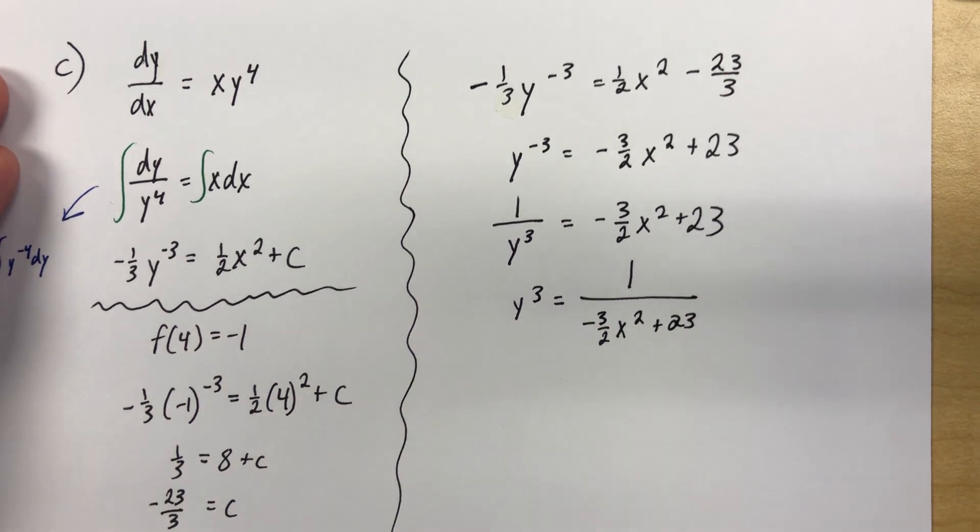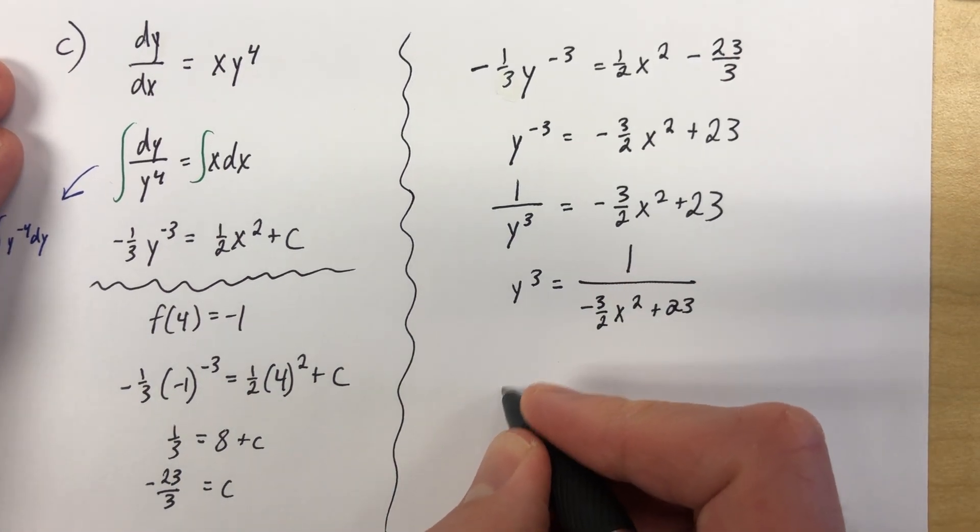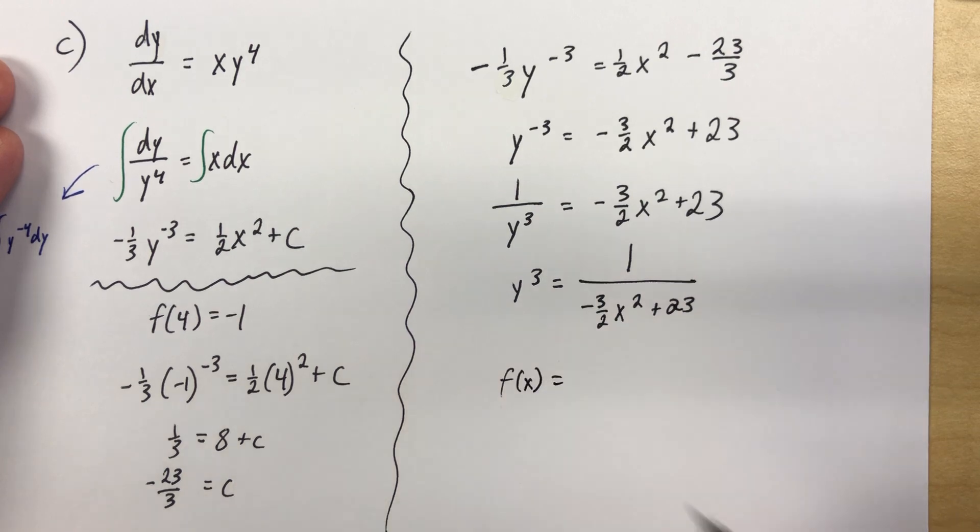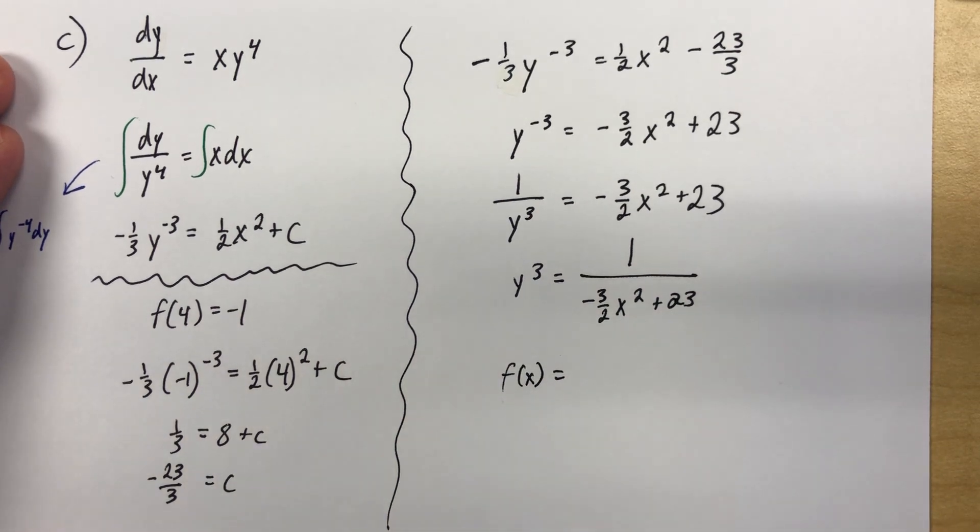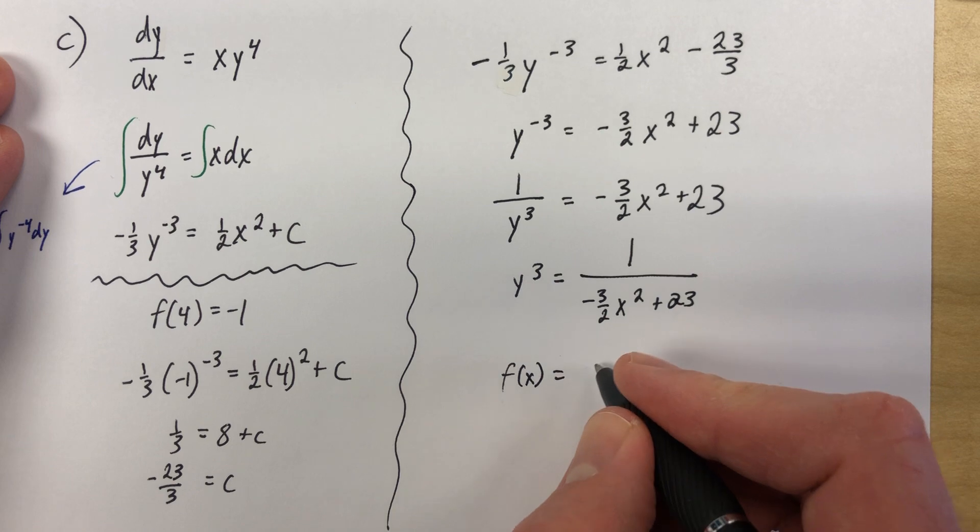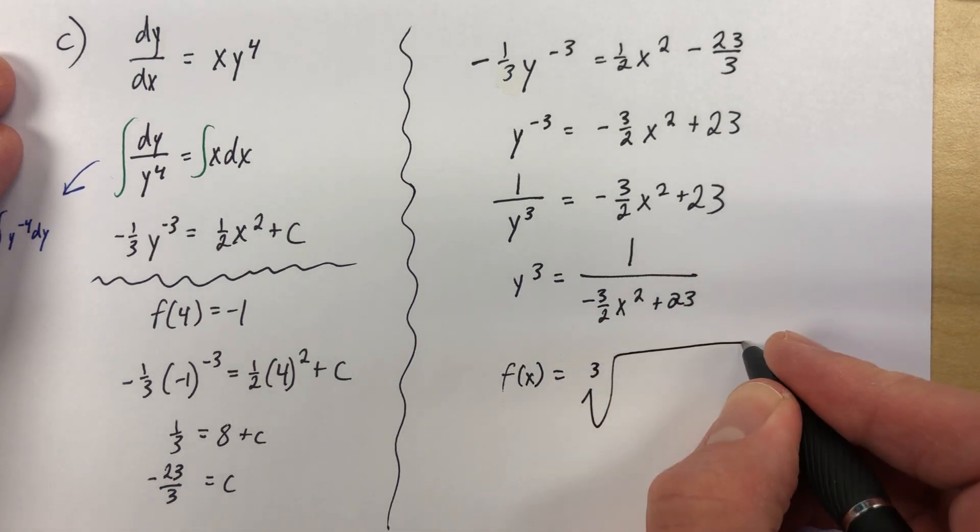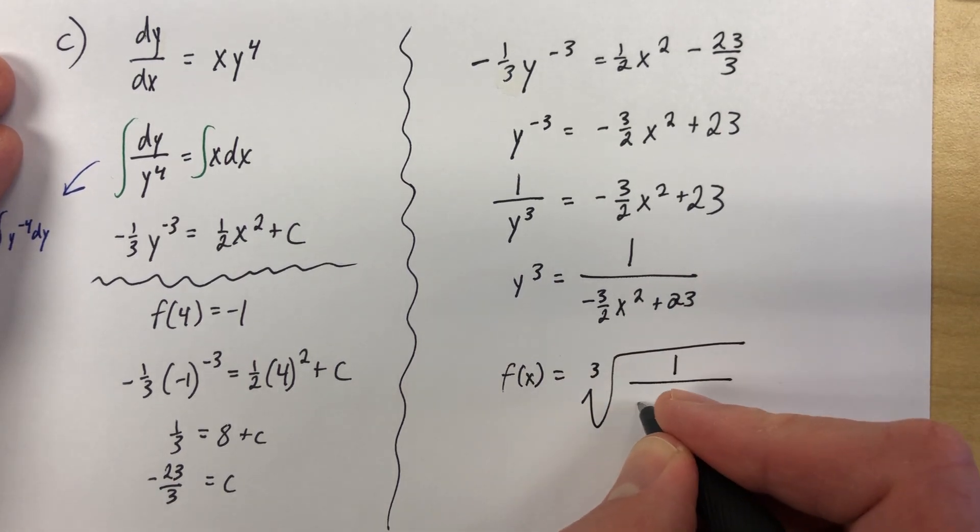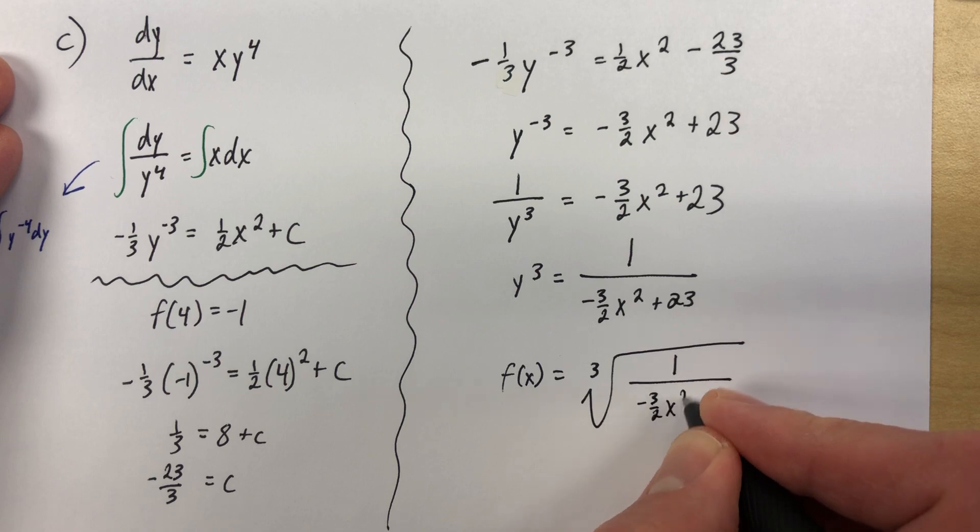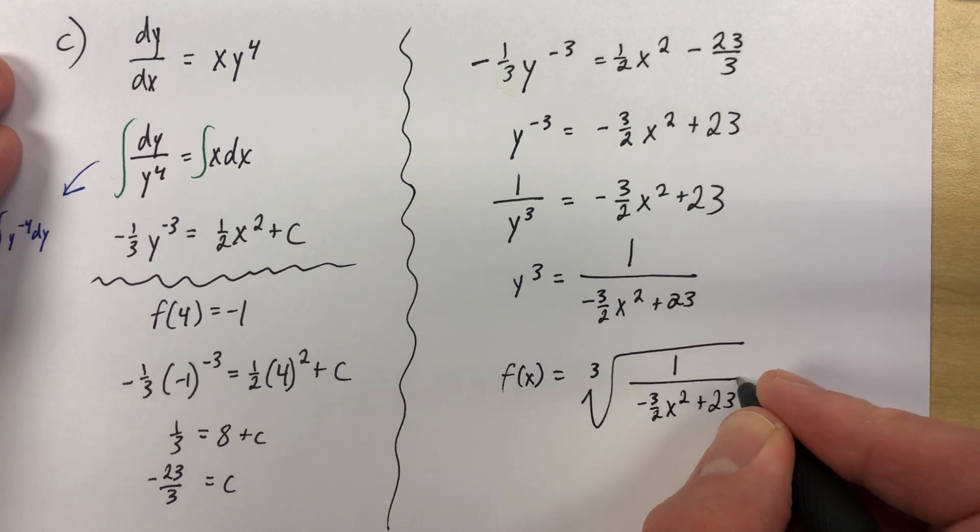And now I'm ready to cube root it. So y equals, we're going to call it f of x equals, because now we really have, we've solved this thing. You could say y equals if you want to. You could call it f of x. Either way. Cube root of everything that was just written. 1 over (-3/2 x squared plus 23). We have solved it.